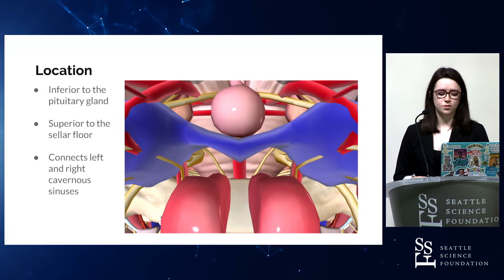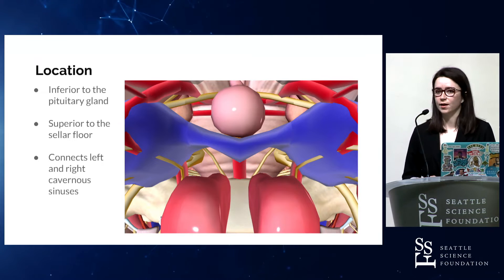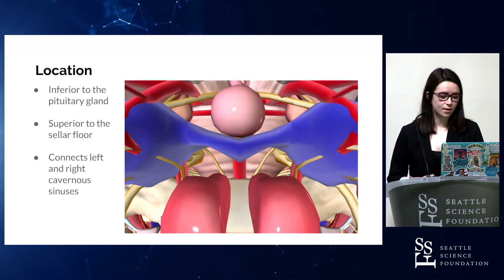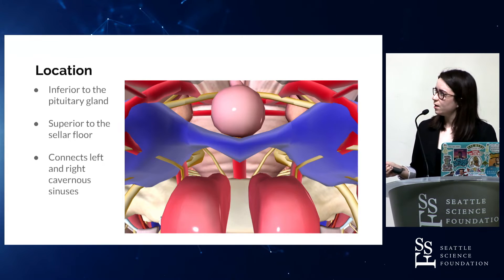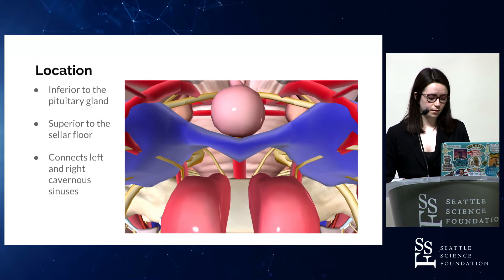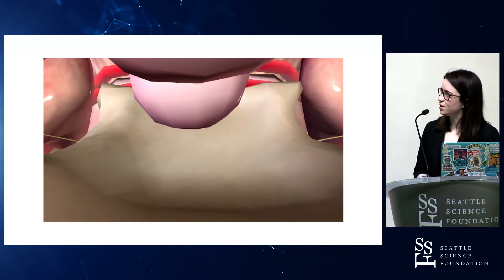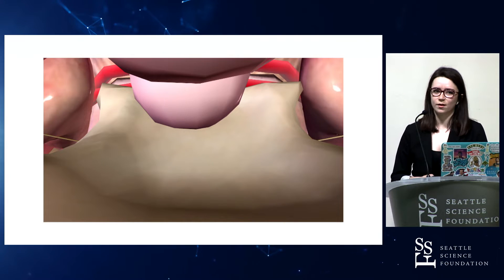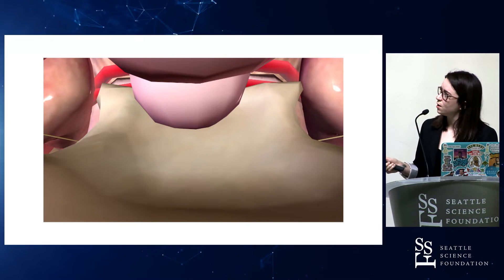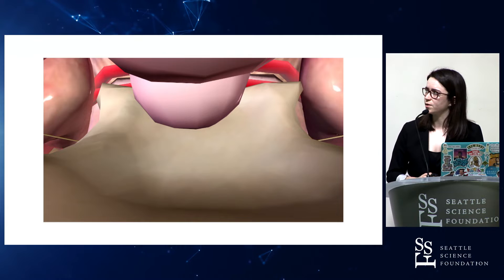One layer is an endosteal-dural layer that adheres to the osseous sphenoid bone, and another is a meningeal-dural layer that encapsulates the pituitary body. Frequently in the literature we have found that the inferior intercavernous sinus sits about one millimeter in front of the neurohypophysis. This image is as if we were inside the inferior intercavernous sinus ourselves, looking at the anterior body of the pituitary, the posterior body of the pituitary, and here is the sellar floor — this is commonly where it would sit.